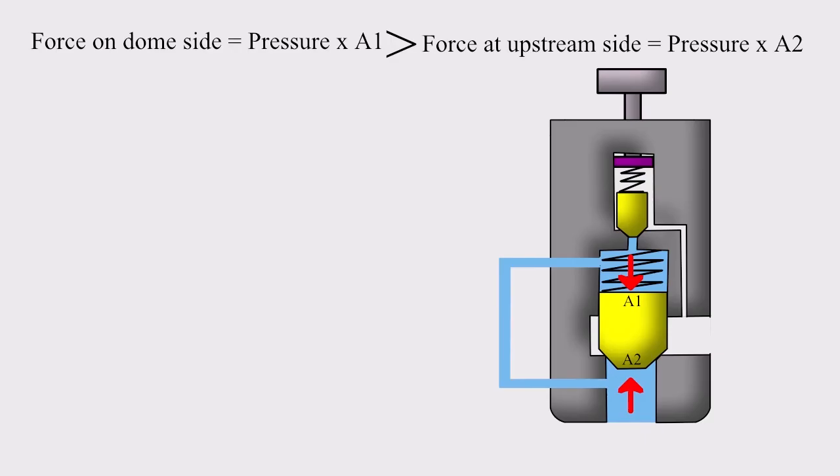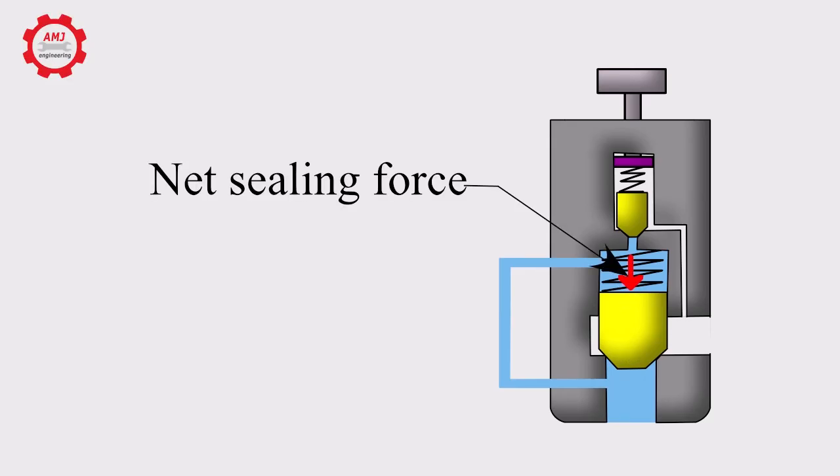The area of the piston on which fluid force is acting is larger in the dome than it is on the upstream side. The result is a larger force on the dome side than the upstream side. This produces a net sealing force.